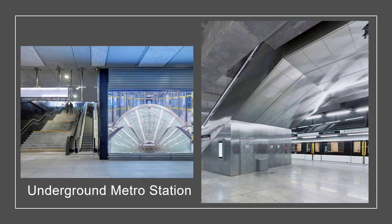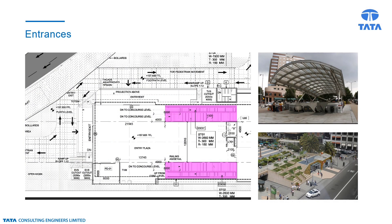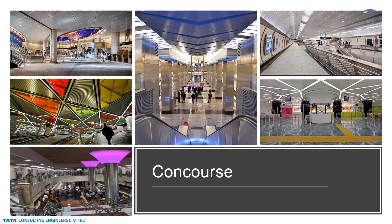In an underground metro, the tracks are below the ground with entrances and exits leading up to the ground or street level. The bulk of the station is typically positioned under the land reserved for public spaces. Station entrances are the link between the station concourse and the surrounding streets. Entrances must be visible, easily recognizable, provided with closure devices for security, and suitably protected against flood water ingress.